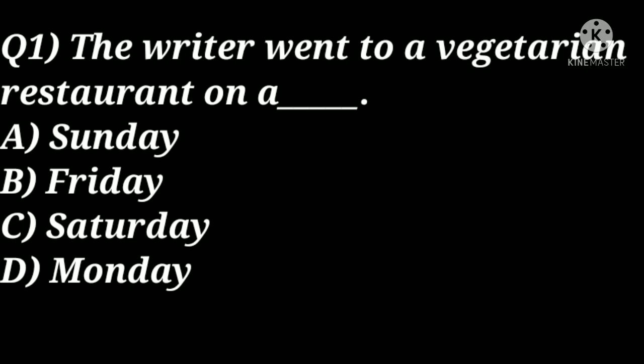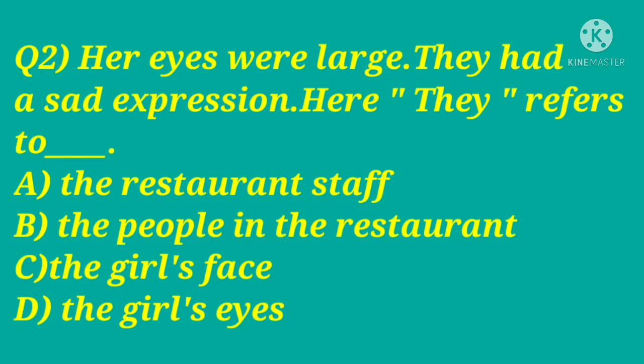Question 1: The writer went to a vegetarian restaurant on a — Sunday, Friday, Saturday, or Monday? The correct answer is Saturday. Question 2: 'Her eyes were laden; they had a sad expression.' Here 'they' refers to — the restaurant staff, the people in the restaurant, the girl's face, or the girl's eyes? The correct answer is the girl's eyes.